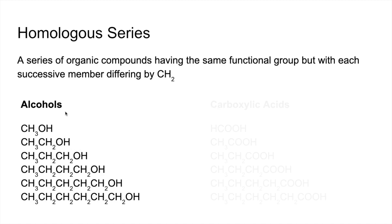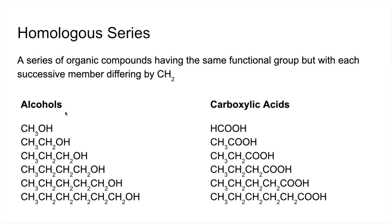The other one to show you is the carboxylic acids. They all contain the functional group COOH, and the difference between each successive member is CH2, and so on.